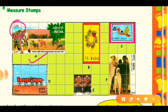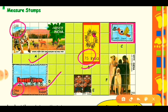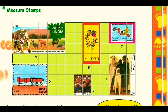Now come to stamp B. Here it is written 75, so the value of this stamp ticket is 75 paise. Similarly, come to stamp D. Here it is written 200, so the value of this stamp ticket is 200 paise, or 2 rupees.